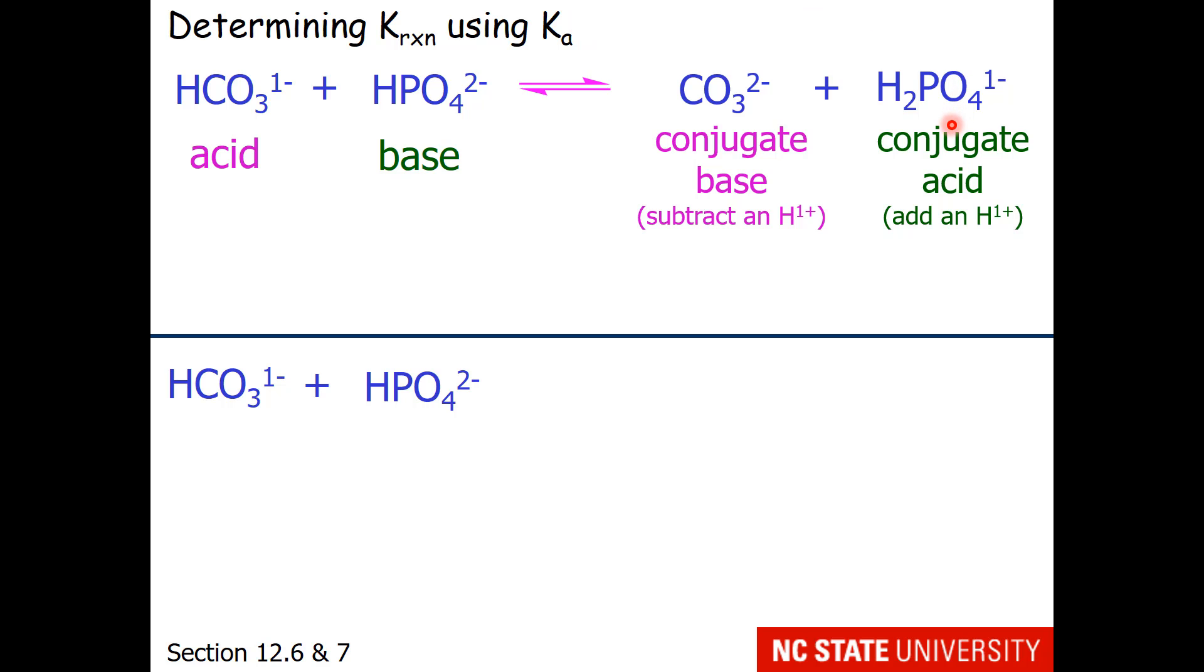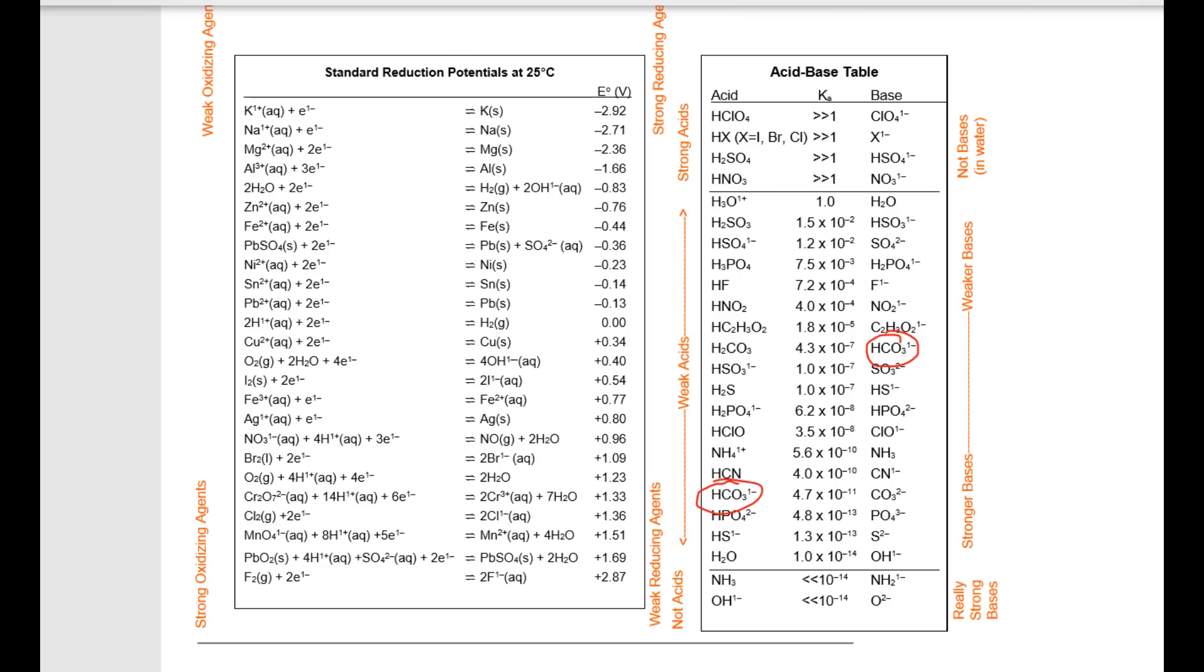Now I need to look up the Ka of hydrogen carbonate, which is my reacting acid, and the Ka of dihydrogen phosphate, which is my produced acid. Now a little bit of instruction regarding some dangers of using the table. Hydrogen carbonate is two places on the table. Dihydrogen phosphate is also two places on the table. But we want to know the Ka for them reacting as an acid.